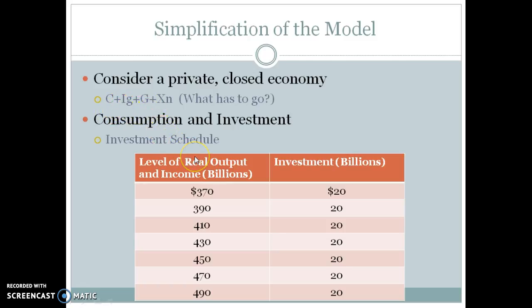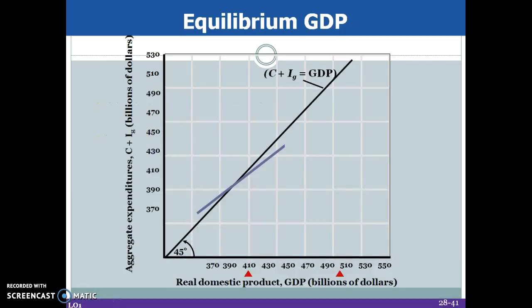What we're looking at here is an investment schedule. Notice that real output and income are in the same column — any output is going to be equal to income for those producing it. On the other side, we have gross investment by private individuals and corporations. The level of output and income increases as you go down, while the level of investment stays relatively the same.